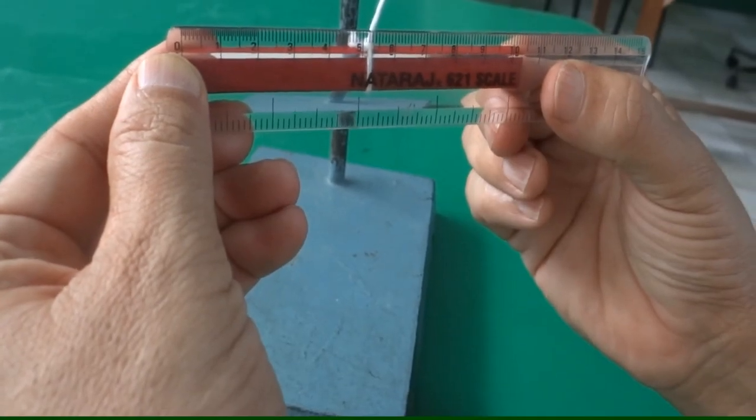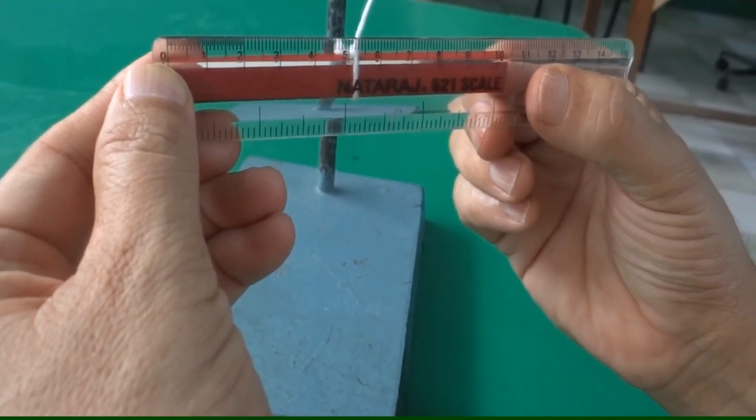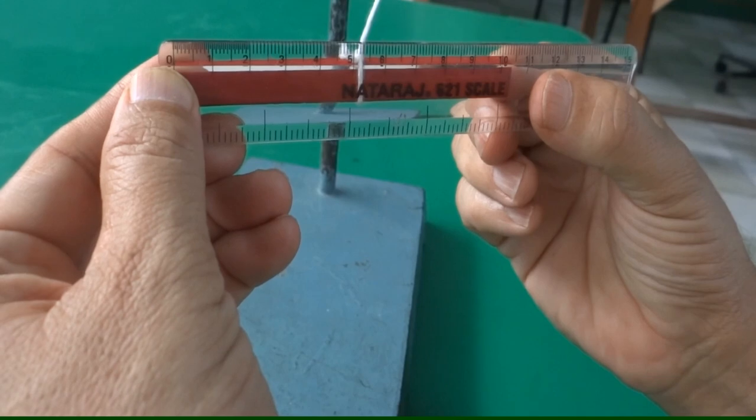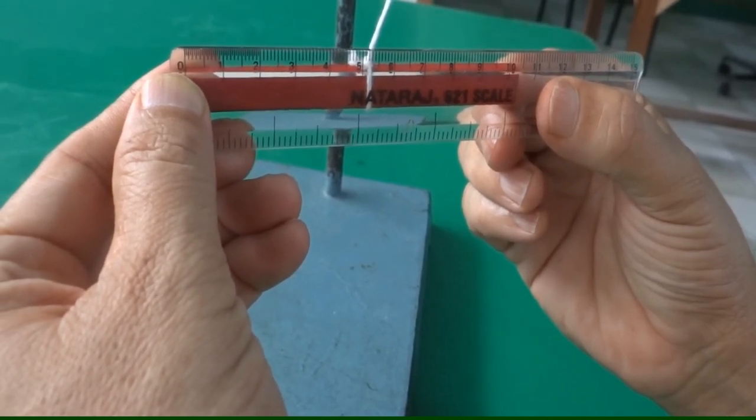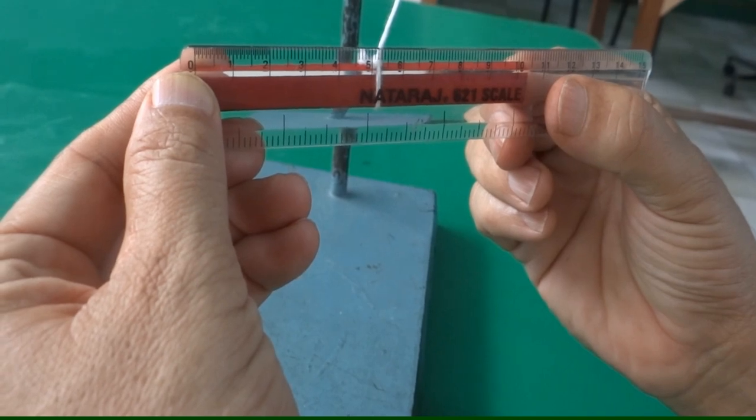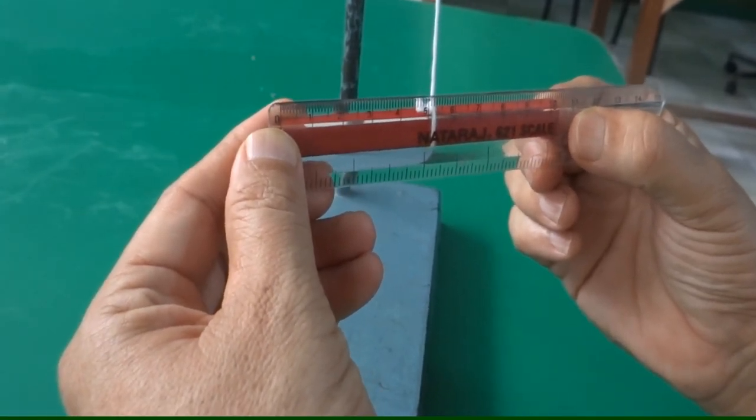I am showing here the exact length of this bar magnet. It is a uniform bar magnet, 10.2 cm long, and I have tied it right at the middle, that is 5.1 cm. You can look at here, so technically it should be the center of mass.